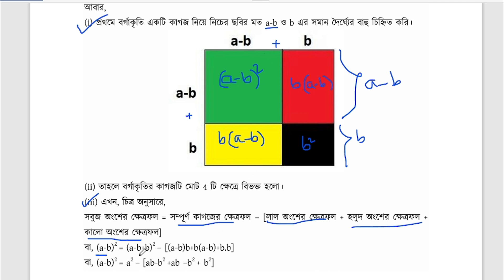Now, let's say a minus b plus b. We have a square, then we have a square, then b into (a minus b), then a minus b into b. We have a square again, and b into (a minus b).